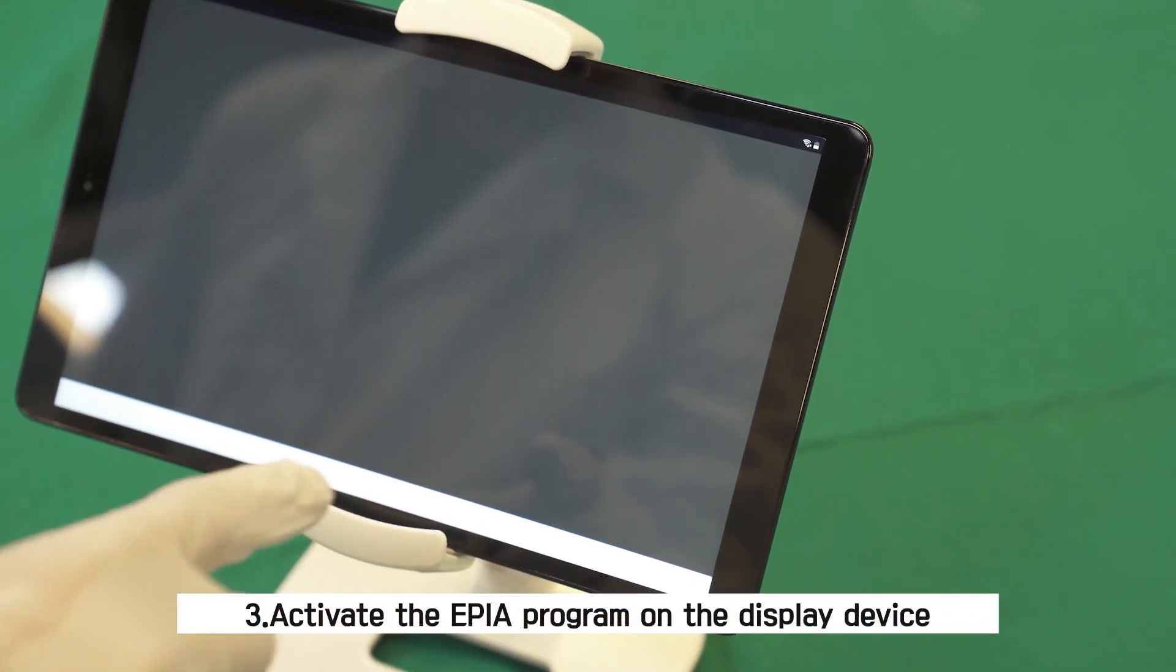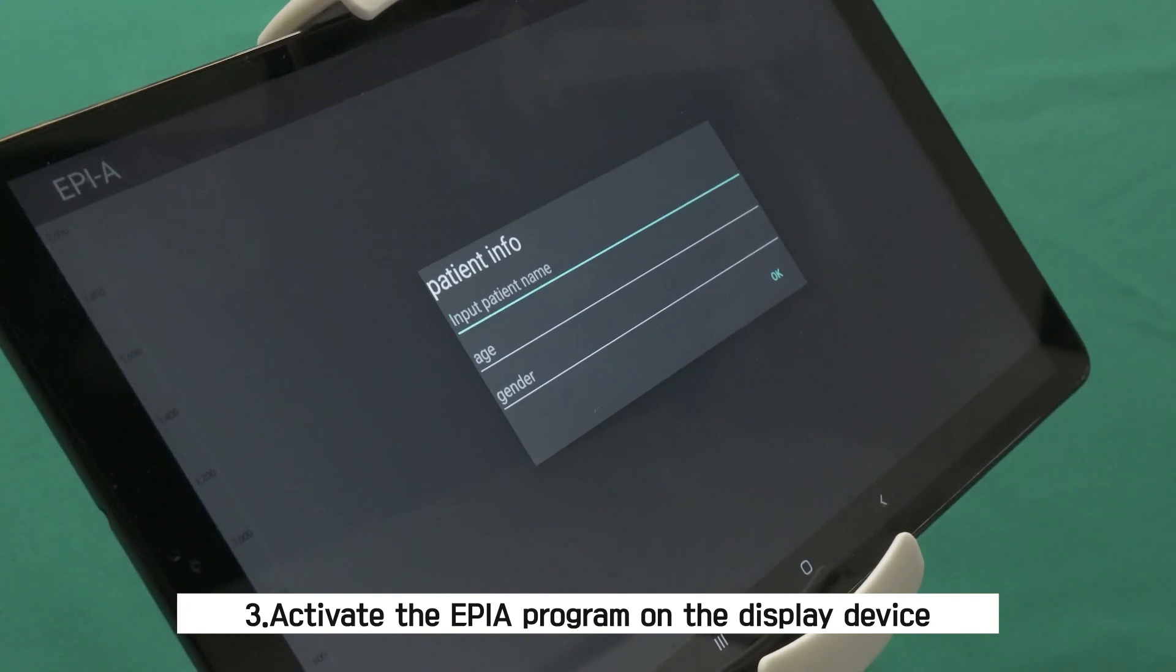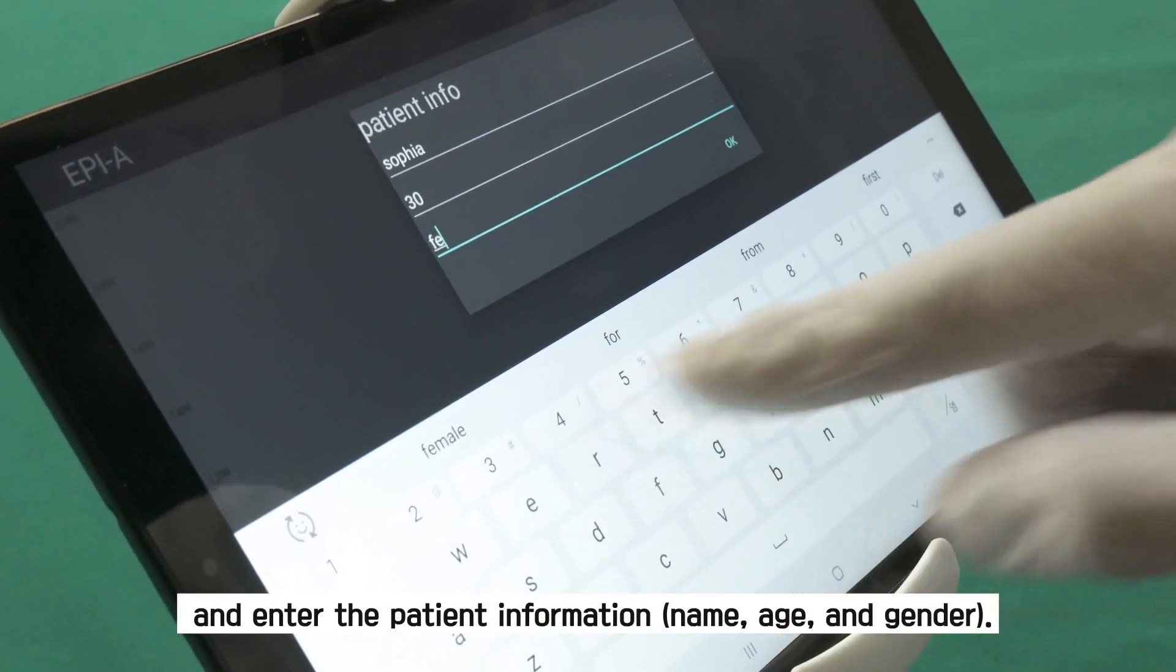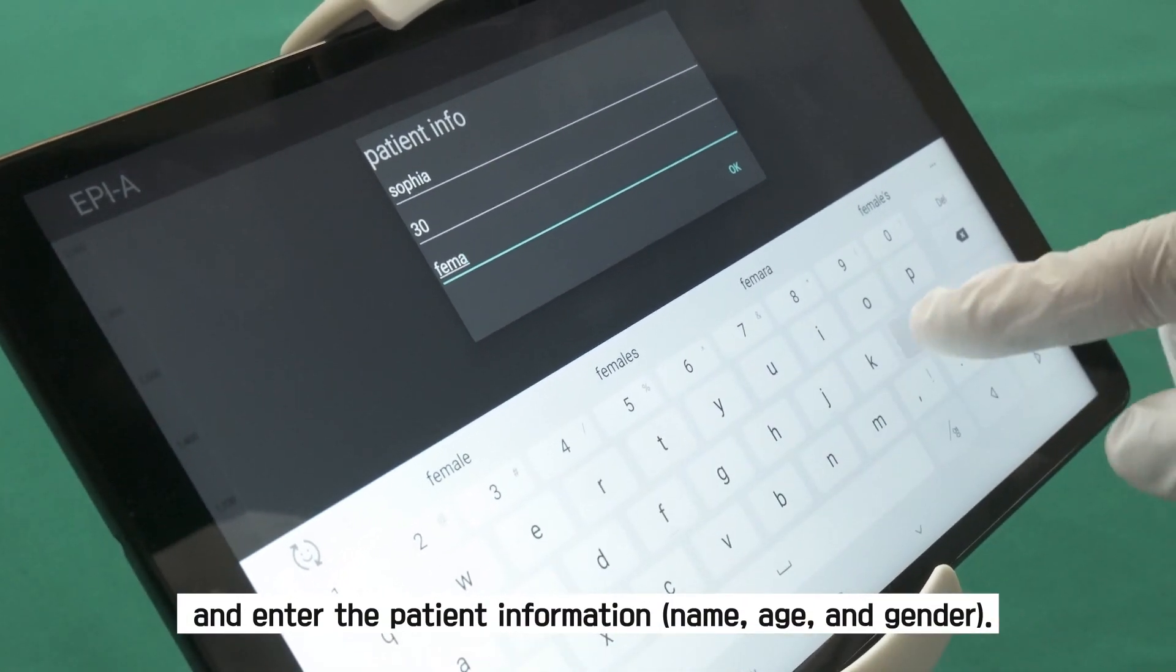Third, activate the EPIA program on the display device and enter the patient information like name, age, and gender.